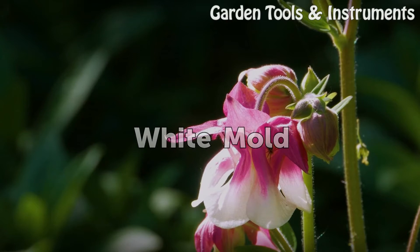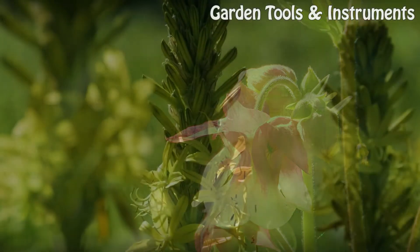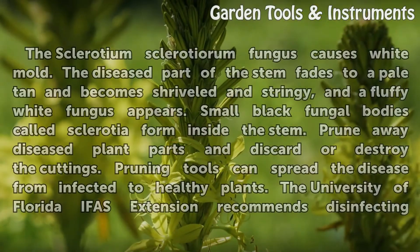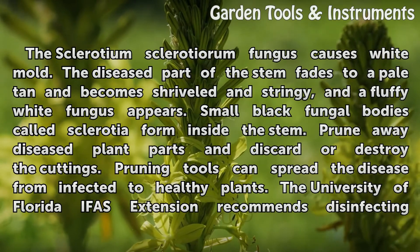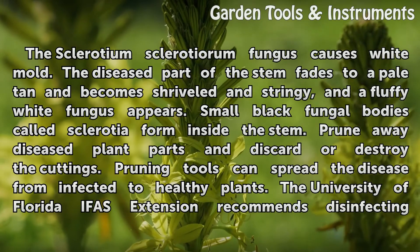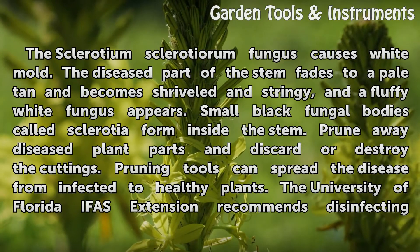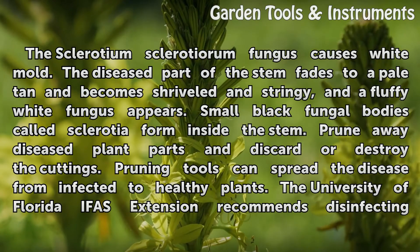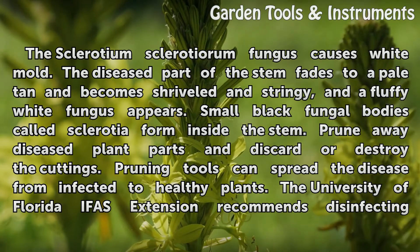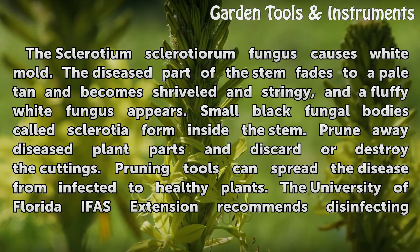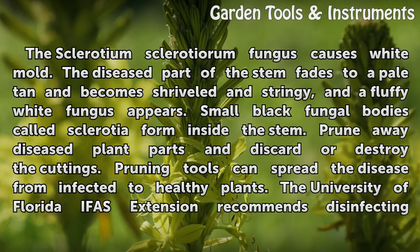White Mold. The Sclerotinia sclerotiorum fungus causes white mold. The diseased part of the stem fades to a pale tan and becomes shriveled and stringy, and a fluffy white fungus appears. Small black fungal bodies called sclerotia form inside the stem.